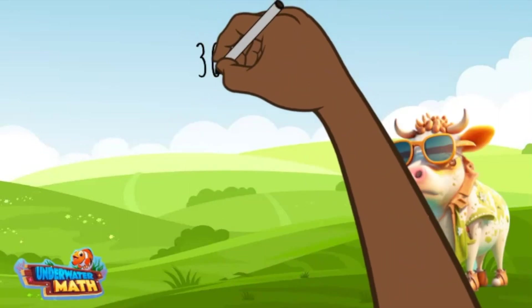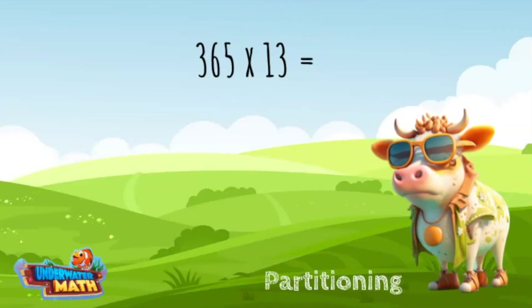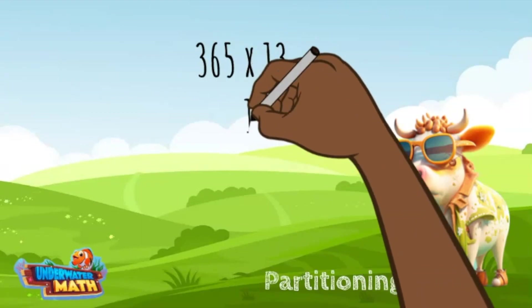Here's the multiplication problem we will work with today: 365 times 13. I am going to start with the partition strategy. Partition means to divide into parts. I am going to divide the smaller factor into parts that are easier to multiply. The number 13 can also be written as 10 plus 3.